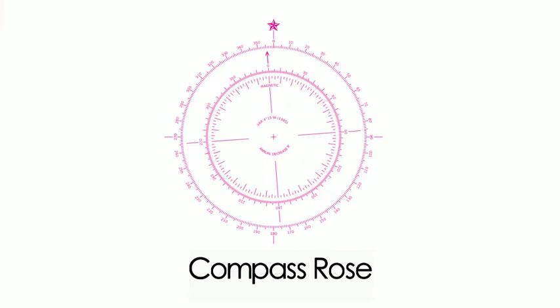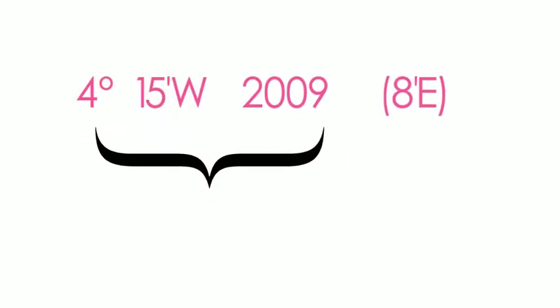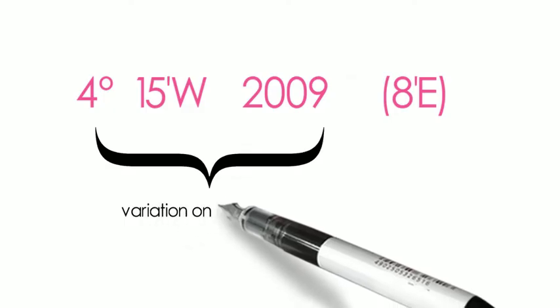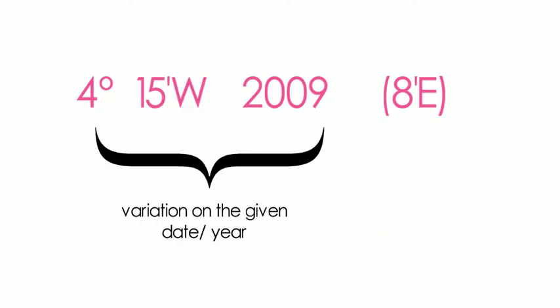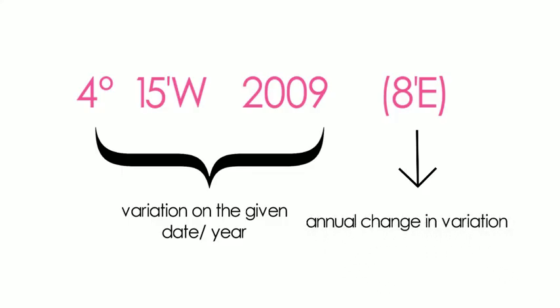Now, let us interpret the compass rose information. This is the variation on a given date. In this case, the variation is 4 degrees 15 minutes west in the year 2009. The one enclosed inside the parenthesis is the annual change in variation. For this one, the annual change is 8 minutes east.